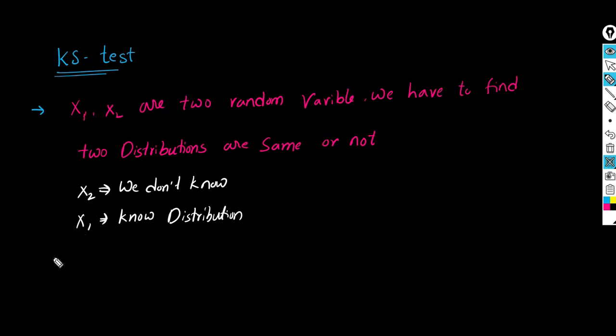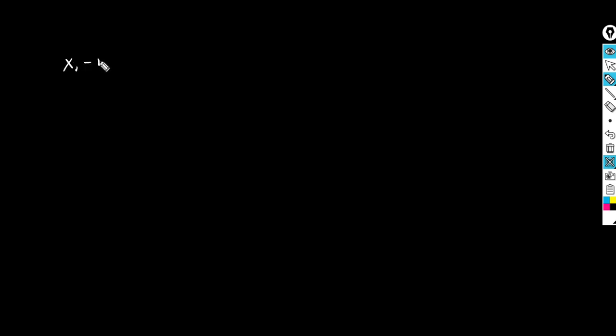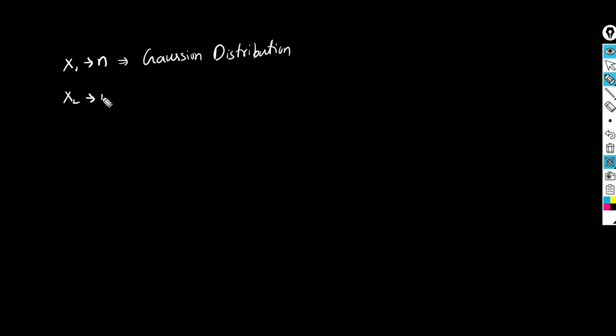Let's go into a deep dive. Let us consider x1 contains n number of points, and the distribution we know — let's consider a Gaussian distribution. And x2 contains m number of points, but we don't know the distribution.